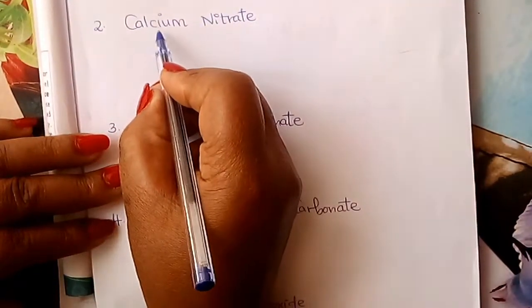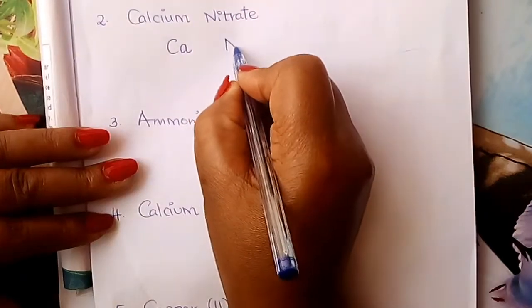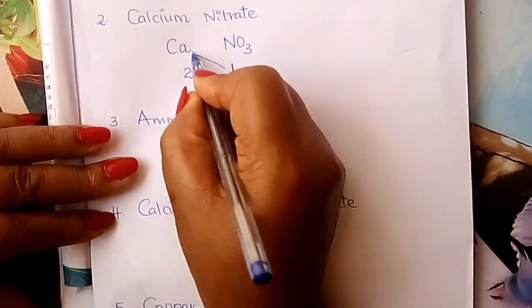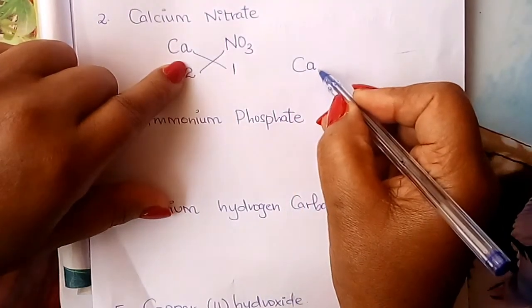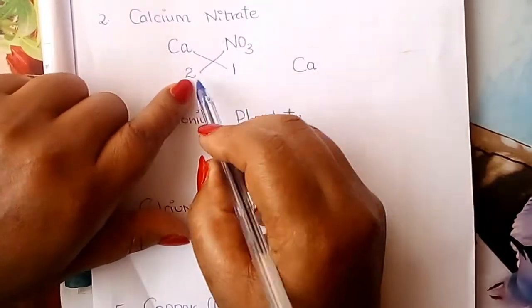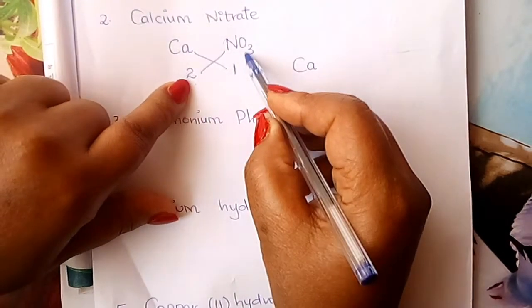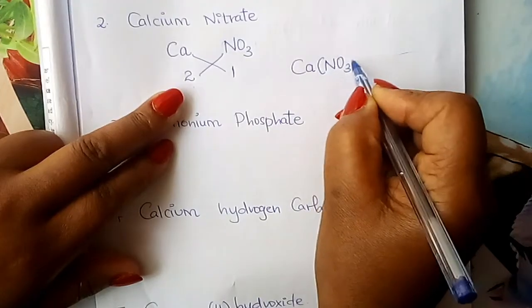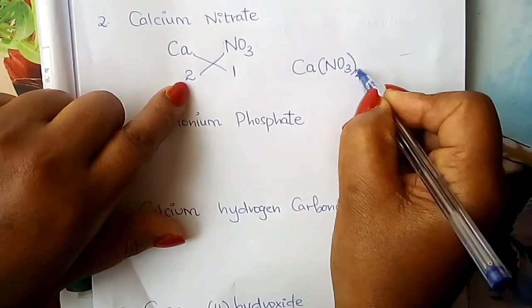We go to calcium nitrate. Calcium's symbol is Ca. Nitrate from our song is NO3. Ignore the charges for now. Calcium has valency two; nitrate has valency one. Interchange: calcium takes one — you don't need to write the one. Nitrate radical takes two. If a radical takes more than one — that is two, three, four — you put it inside a bracket, then write the number outside. So the formula is Ca(NO3)2.